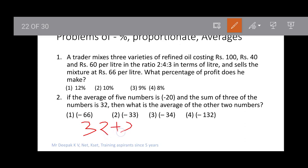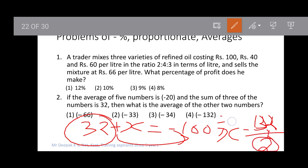32 + x = -100, so x = -100 - 32 = -132. They asked for the average of 2 numbers, so -132÷2 = -66. Option 1 is our answer.